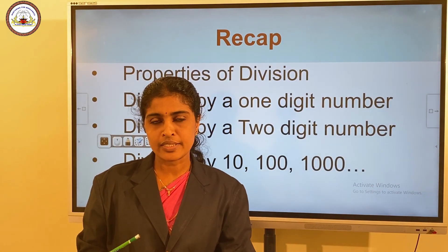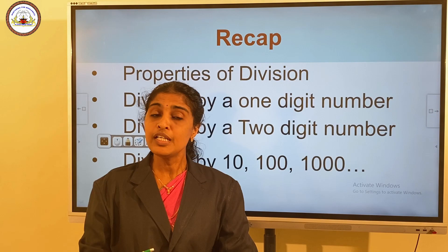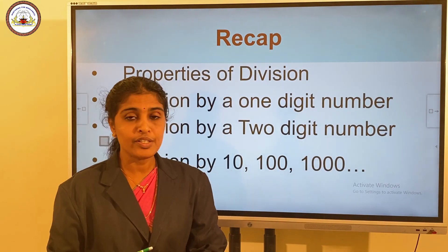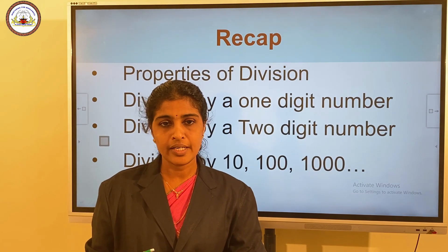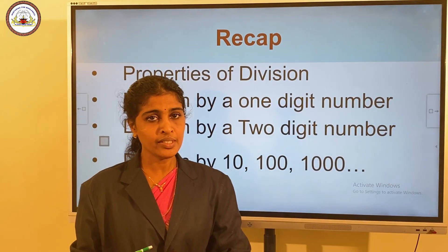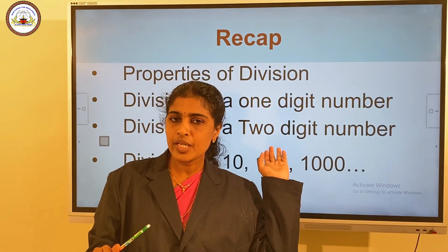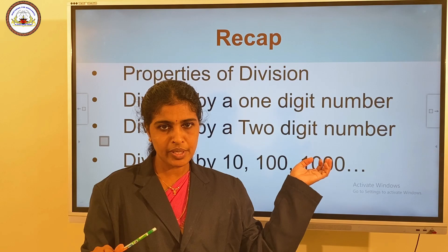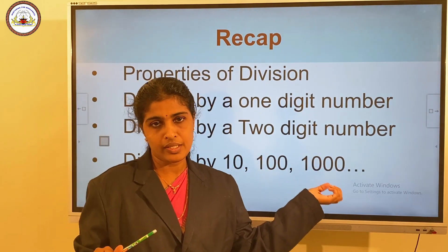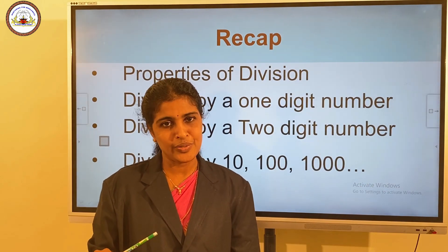Now we can conclude this section. In this section, we discussed about the division of two-digit numbers, word problems, and division by ten, hundred, and thousand. And in this chapter of division, we first discussed the properties of division, division by one-digit numbers, division by two-digit numbers, and division by multiples of ten — ten, hundred, thousand, etc. Thank you.